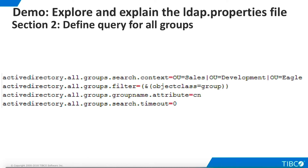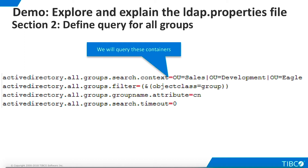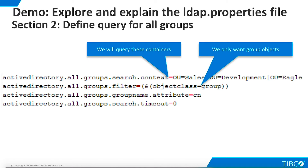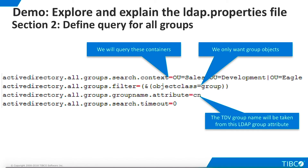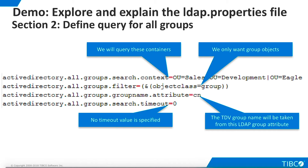Section 2 defines the query parameters that TDV will use to find all groups. We specify that TDV should search three organizational unit containers — Sales, Development, and Eagle — and that we are only interested in group objects. We choose the CN or Common Name attribute as the one that will be used as the TDV group name. We specify no timeout period for the query.